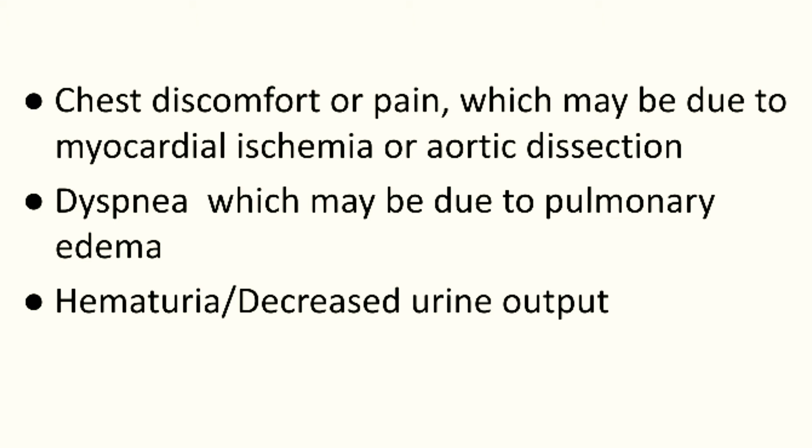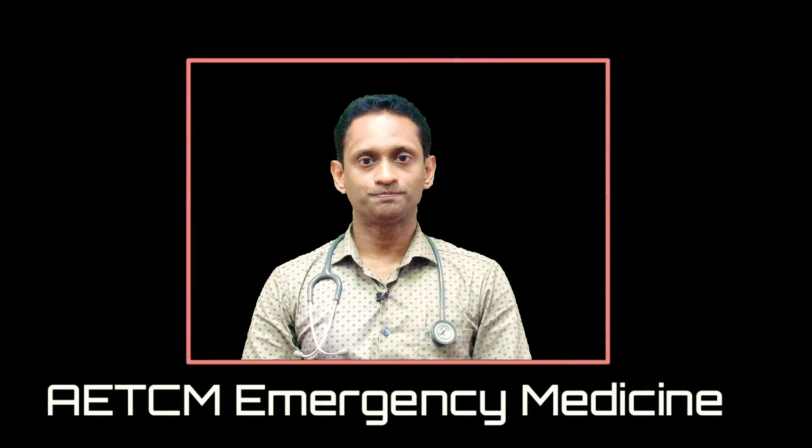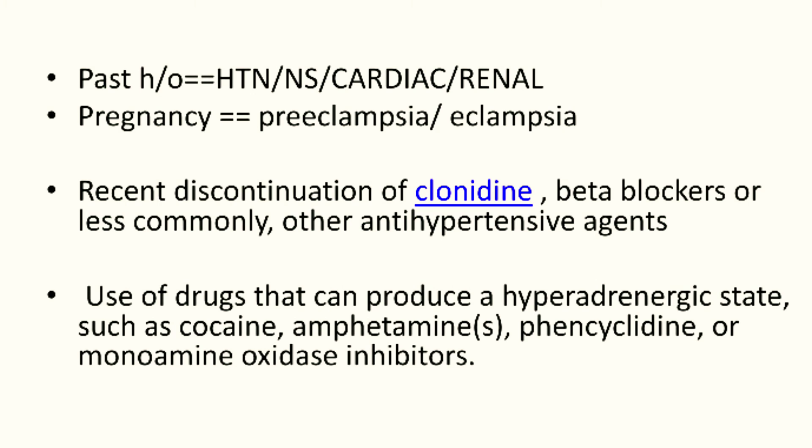Vomiting can be a sign of raised intracranial pressure. Chest discomfort or pain may indicate myocardial ischemia or aortic dissection. Dyspnea can be present due to pulmonary edema. If there is hypertensive renal involvement, there can be hematuria and decreased urine output. Past history should include hypertension, neurological events, cardiac illness, renal issues, and in pregnant patients, preeclampsia or eclampsia.